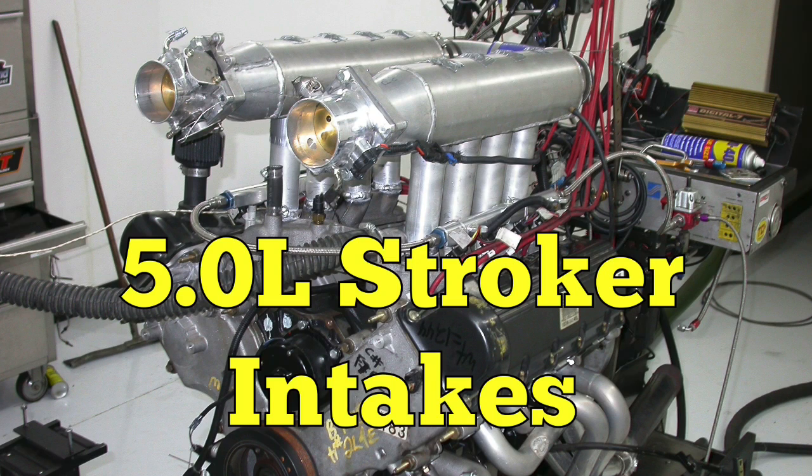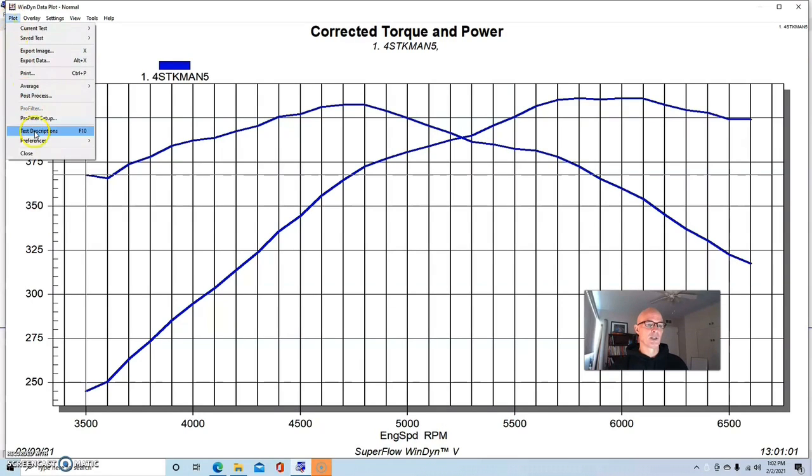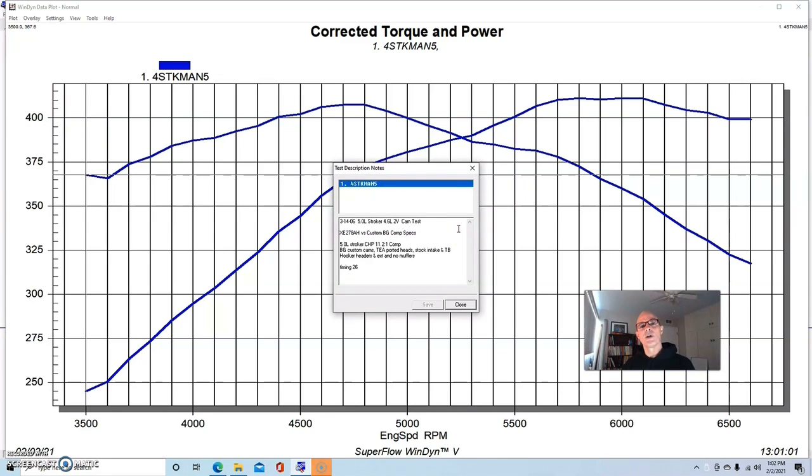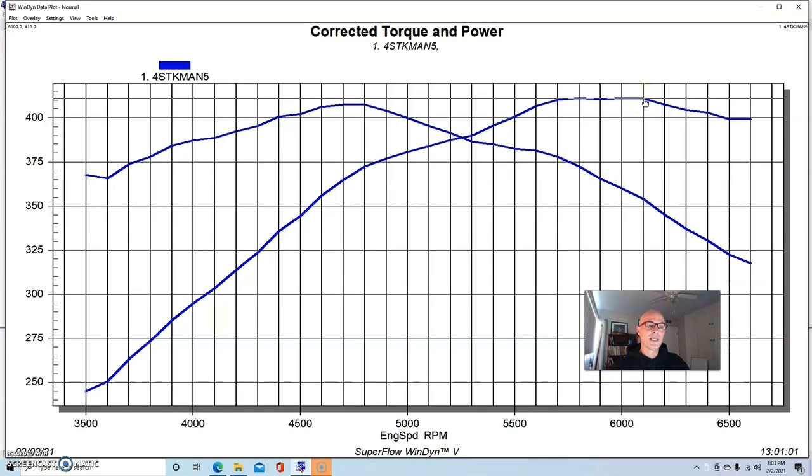Our final test was run on a stroker version of a 4.6 two valve. This was actually a 5 liter version and it was a fairly healthy one with a lot of good parts in it. It was a little over 11 to 1 compression with forged internals. It had a set of TEA ported PI heads, some fairly big camshafts - Extreme Energy 278AHs, which were basically the biggest PI head cam that Comp had back then. We ran it with long tube headers and no mufflers, just collector extensions. With a PI intake manifold, AccuFab elbow and throttle body, this combination made 411 horsepower and 407 foot-pounds of torque.